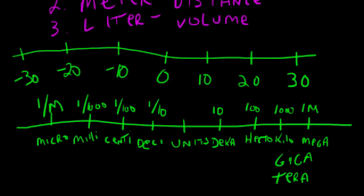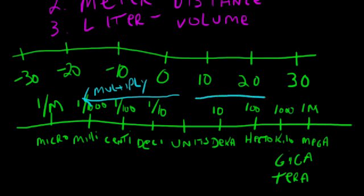Each time you do conversions from units — for example, going to the left on the number line, going in that direction — you're going to multiply. If you're going to a larger unit of measure, you're going to divide. And because these are multiples of ten, you're going to be multiplying or dividing by ten, one hundred, a thousand, or one-tenth, one-hundredth, or one-thousandth, for example.